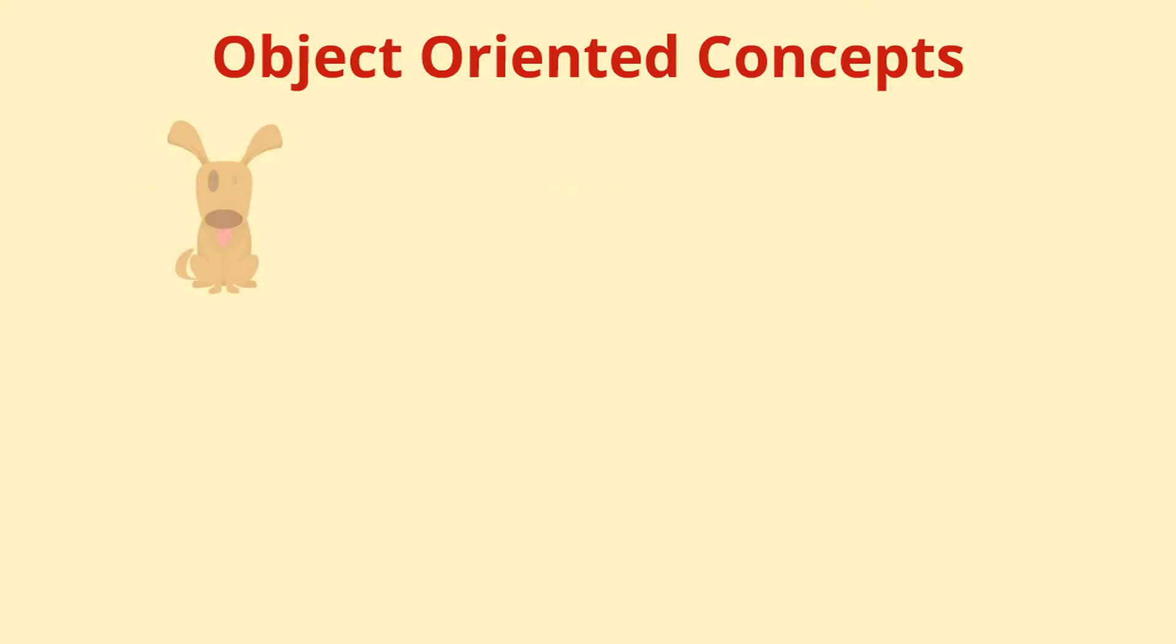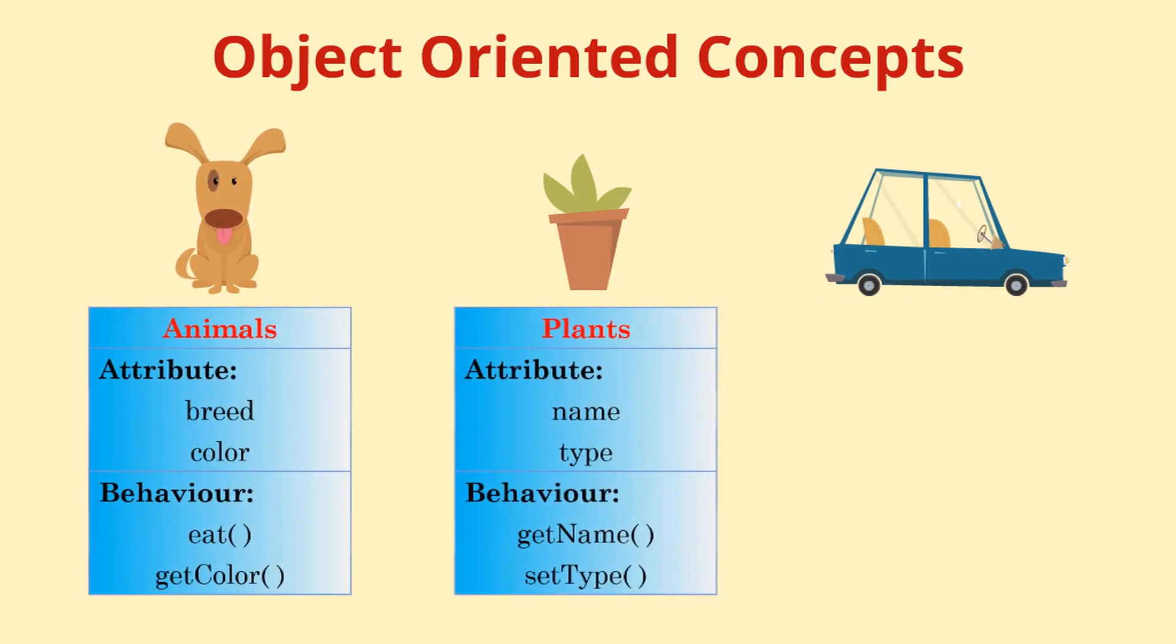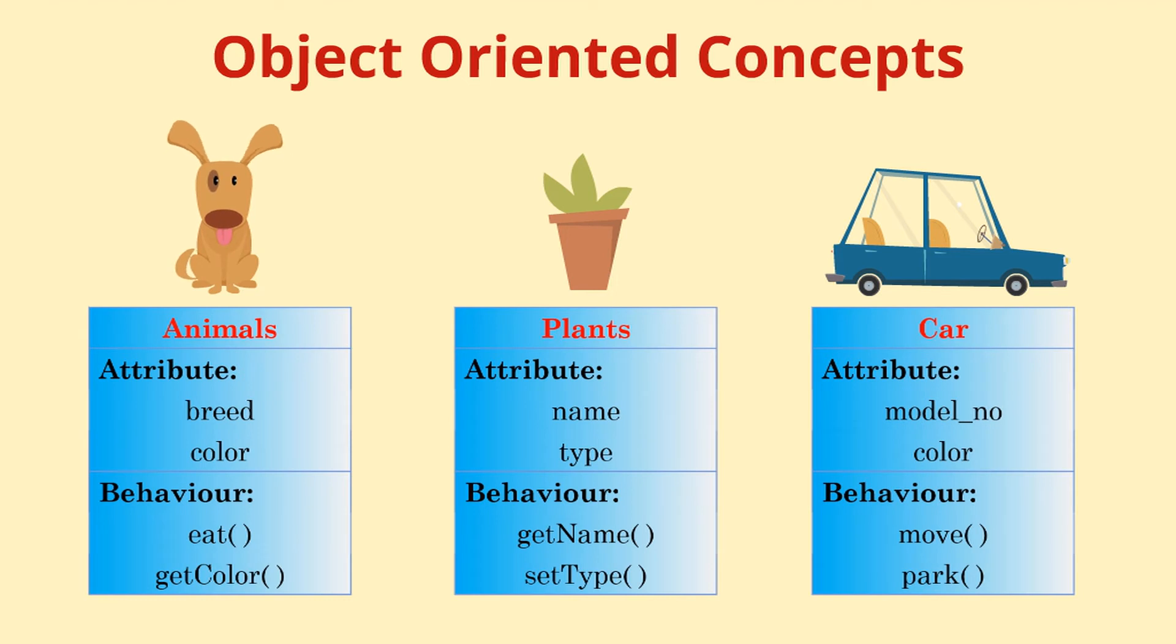Like all the things we see around us: animals, plants, cars, etc. Object-oriented languages create software objects which are as close to real-world as possible.